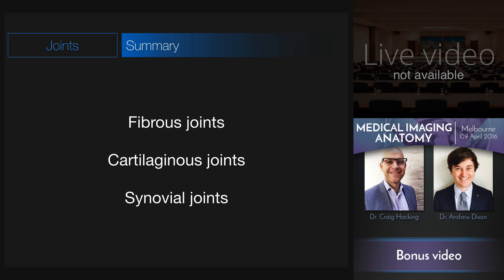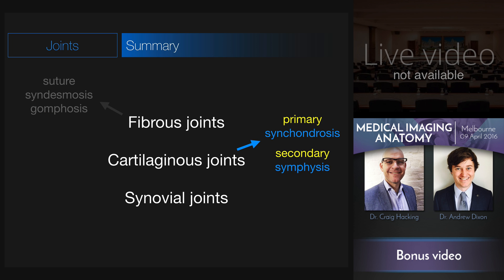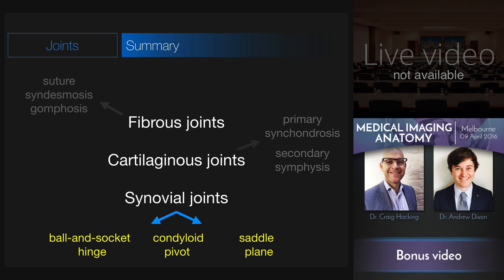The main thing to take away is that there are three structural types of joints: fibrous joints, cartilaginous joints, and synovial joints. Examples of fibrous joints are the cranial sutures, the syndesmosis between radius and ulna and tibia and fibula, and the gomphosis joint of the teeth. Cartilaginous joints can be divided into primary — synchondroses — and secondary, formed by fibrocartilage and called symphyses. Synovial joints come in multiple different forms allowing varying degrees of freedom of movement.